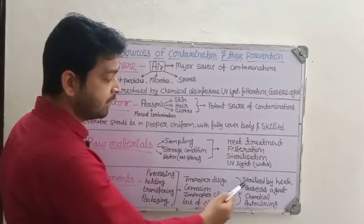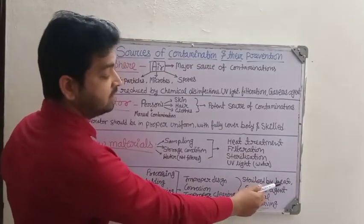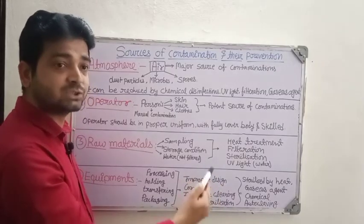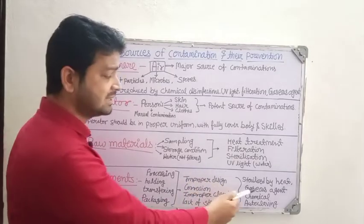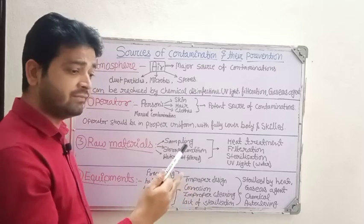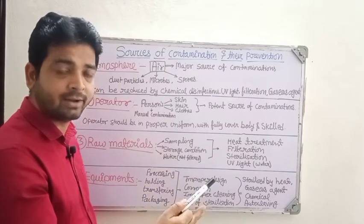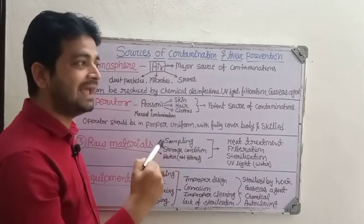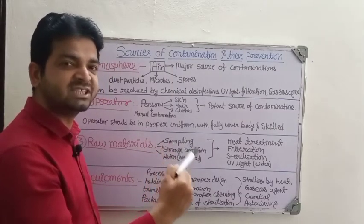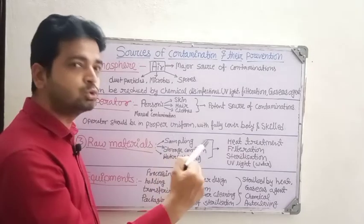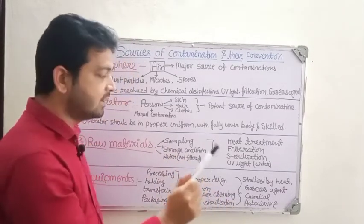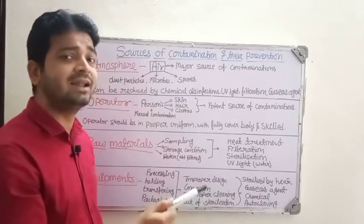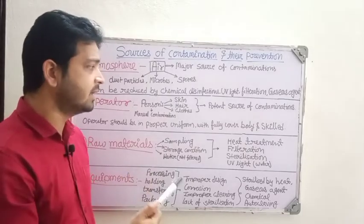To prevent equipment contamination, we can sterilize by heat depending on the size and type of equipment — whether it is glassware or large equipment. For large equipment that cannot be placed in an autoclave, fumigation can be done by passing gases with germicidal properties through the equipment. Different chemicals can also be sprayed for sanitization, and autoclaving can be done for glassware, liquid media, and similar preparations.